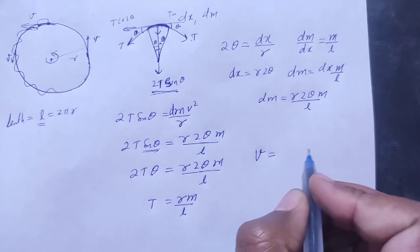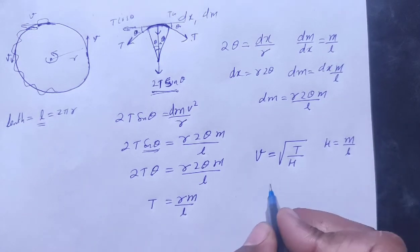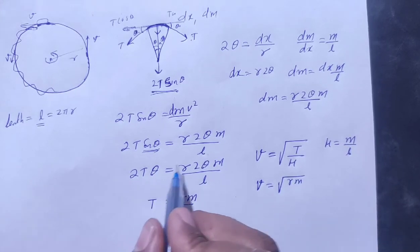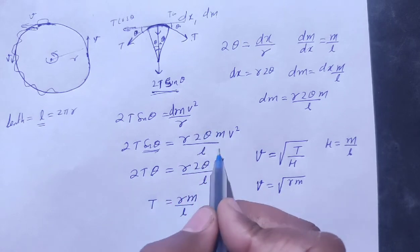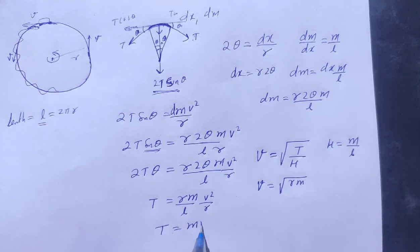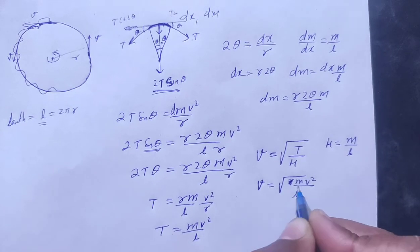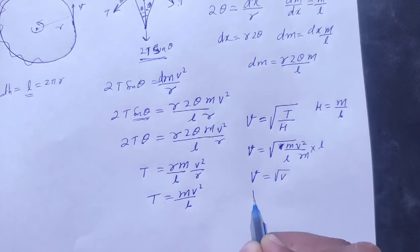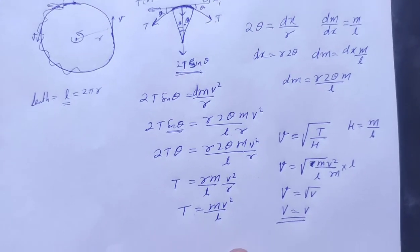The wave speed formula is v_wave equals √(T/μ), where μ is mass per unit length equal to m/l. Substituting T equals m·v²/l and μ equals m/l: the l cancels and m cancels, giving v_wave equals √(v²) equals V. So the wave speed on the string equals the particle speed V — whatever the string's speed is, that is the wave speed.